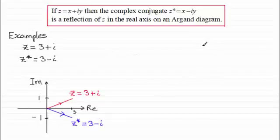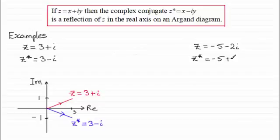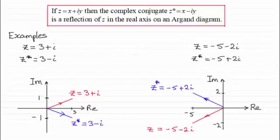Similarly, it works in all quadrants. You could take z equals minus 5 minus 2i, and the complex conjugate z star would be equal to minus 5 plus 2i. This shows you get exactly the same effect whatever quadrant you're in — z equals minus 5 minus 2i, and reflecting that in the real axis gives the complex conjugate minus 5 plus 2i.